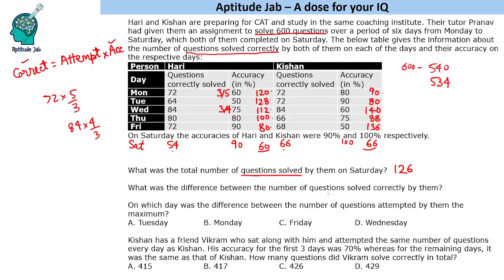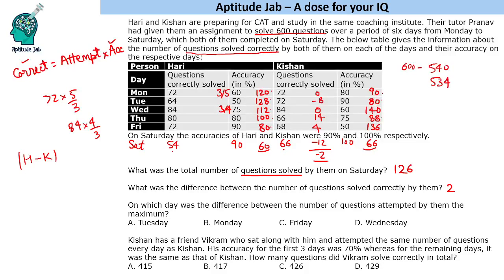Next question: what was the difference between the number of questions solved correctly by them overall? Instead of adding all of Hurry's correct and all of Kishan's correct and then subtracting, a better method is to find Hurry minus Kishan day by day: Monday 0, Tuesday −8, Wednesday 0, Thursday +4, Friday −12, Saturday −18+20... the sum is −2, so the absolute difference is 2.